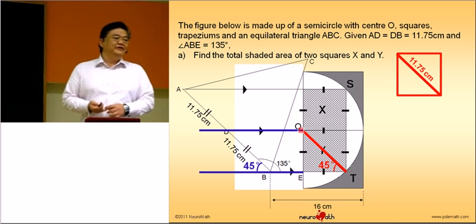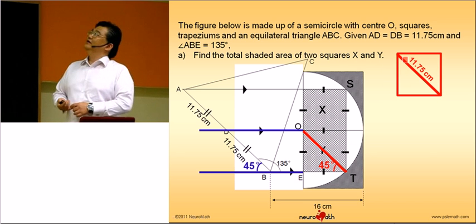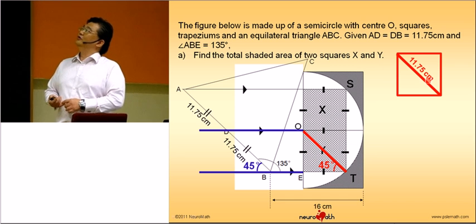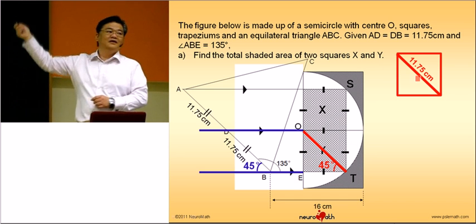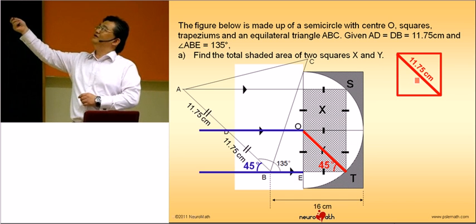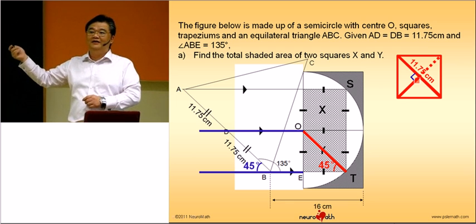Okay, see, you have the diagonal of the square. You know, what length is this? It will be 11.75 divided by 2, correct or not?